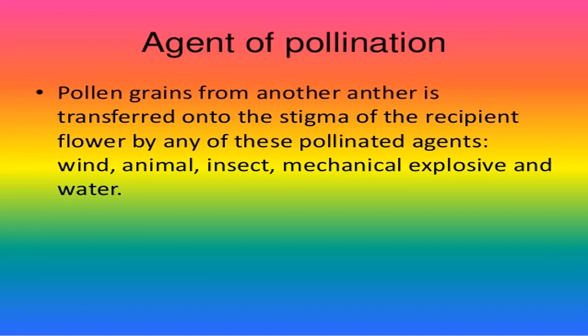How are these pollen grains getting transferred? How are they transferred from one flower to another? This depends upon the agents of pollination. This transfer takes place with the help of some agents. Pollen grains from the anther are transferred onto the stigma of the recipient flower by any one of these pollinating agents — the most common being water, wind, animals, and insects.